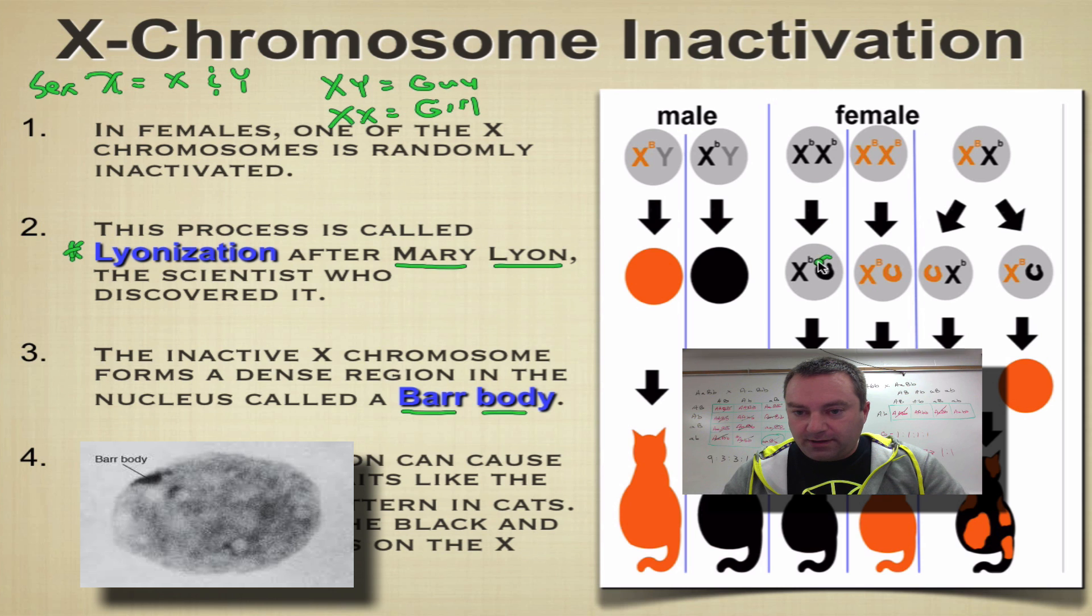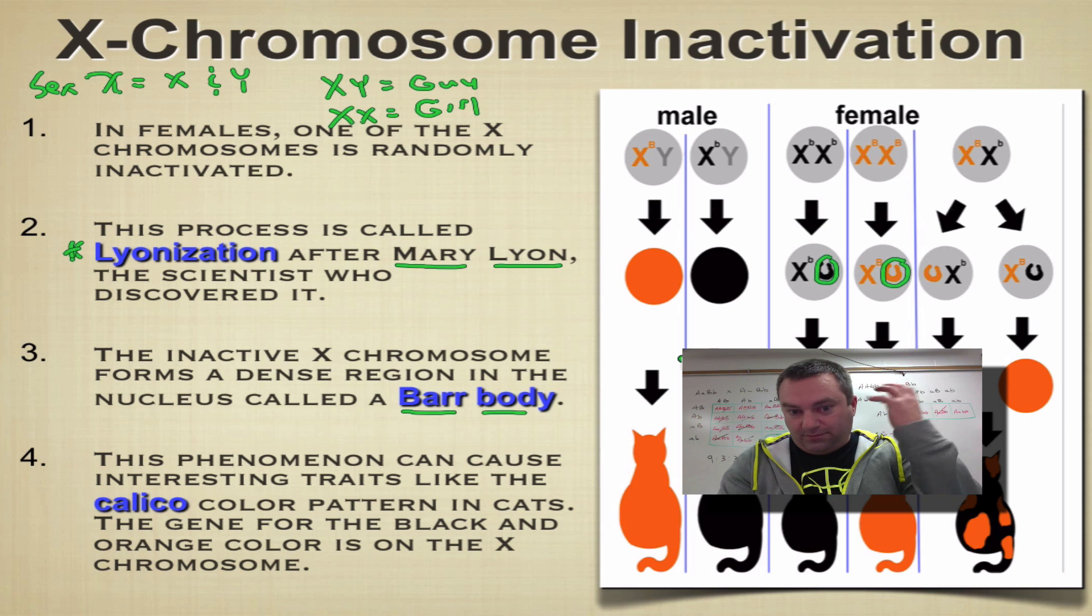If you look over here in this picture, that's a Barr body right there. Here's another one. They're just wadded up, tossed in a corner. You can clearly see this on a microscope in females. One of the things that will show you a demonstration of how this chromosome inactivation can occur is in a calico cat.